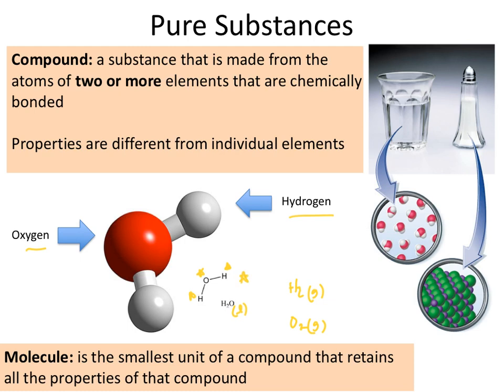This compound's characteristics and features are definitely very different from the individual elemental components that make it up. The molecule is basically the smallest unit of any compound that has the features or characteristics of that particular compound. So for pure substances, elements are made of one type of atom, while compounds are made up of two or more different types of atoms.